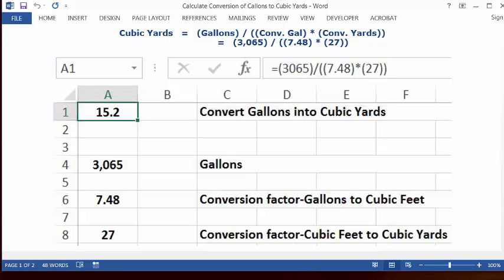In cursor C1, you can type in 'convert gallons into cubic yards.' In cell A1, you can format it as numbers with one decimal and set it as bold and centered.